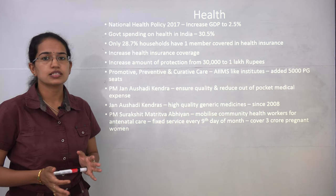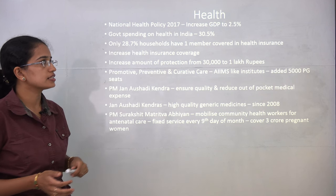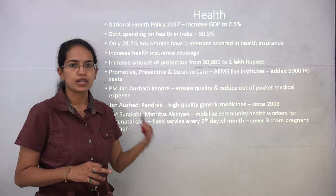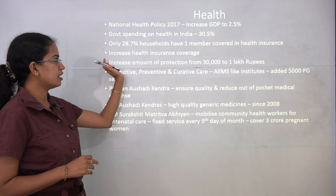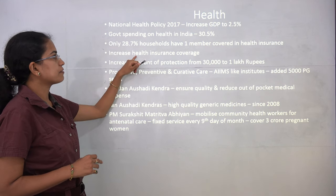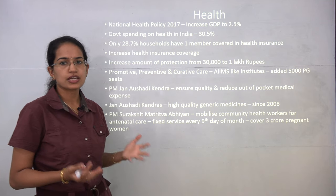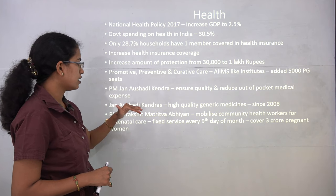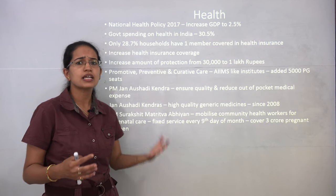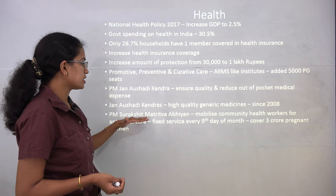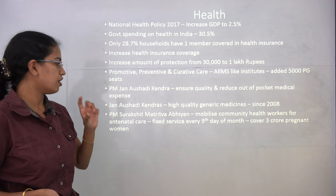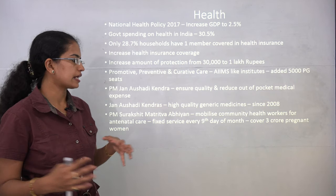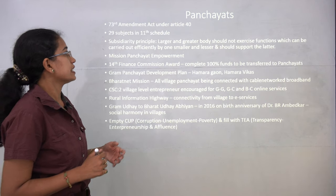The National Health Policy 2017 aims to increase government health spending to 2.5 percent of GDP; government spending has already increased to 30.5 percent. Health insurance is being increased from 30,000 to 1 lakh rupees, as only 28 percent of households have at least one member covered by health insurance. Jan Aushadhi Kendras provide high-quality generic medicines. PM Surakshit Matritva Abhiyan provides antenatal care with fixed services on the ninth of every month.